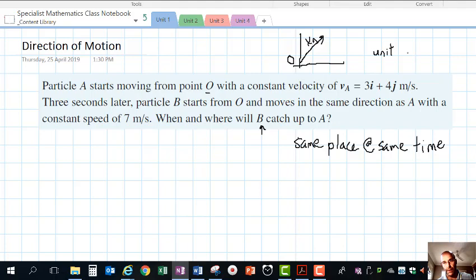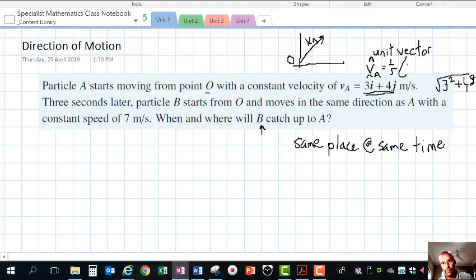We're going to exploit this idea of unit vectors. Unit vectors have magnitude 1 and are in the same direction as the vector they're derived from. For velocity vector of A, the unit vector would be the magnitude made equal to 1. The magnitude is √(3² + 4²) = 5, so the unit vector is 1/5(3i + 4j) meters per second.